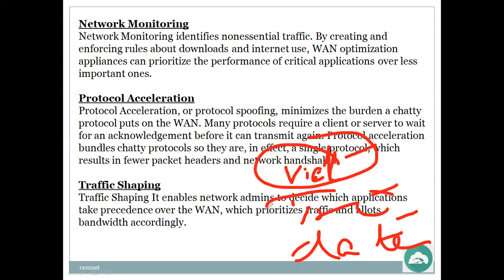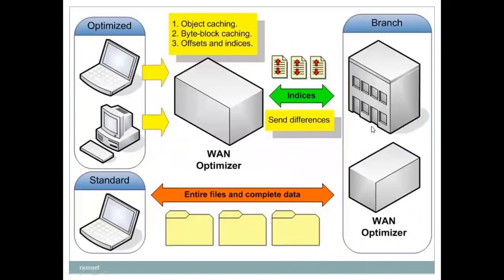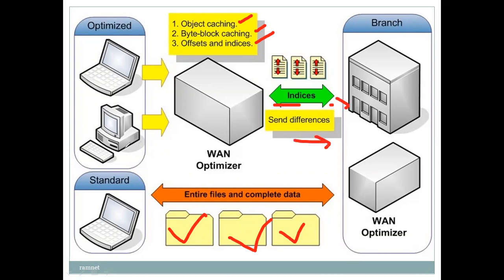For example, if people are producing animations, video traffic is more important. For call centers, voice traffic needs to be prioritized. For database applications, data needs priority. So we make rules according to our network plan. Without optimization, entire files and complete data is sent. With optimization, byte block caching with offsets and indices are used, sending only the differences — deduplication is not done repeatedly.